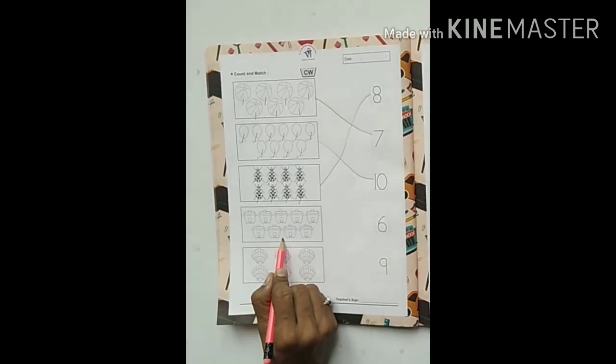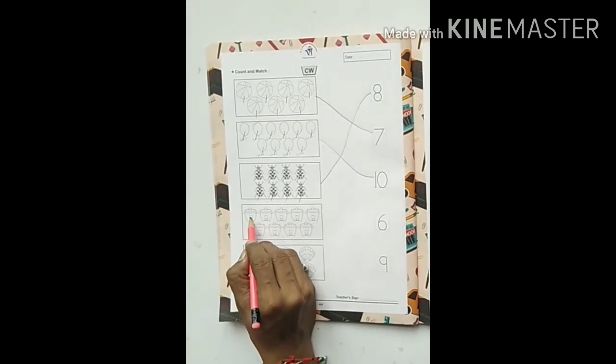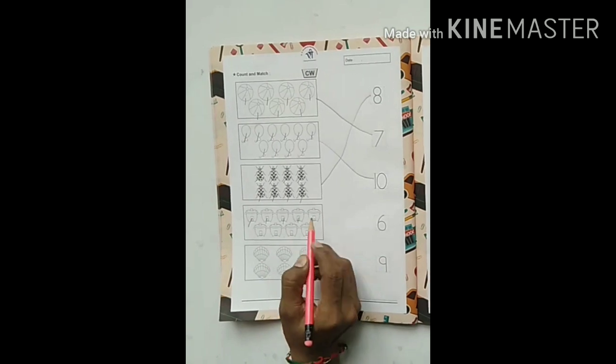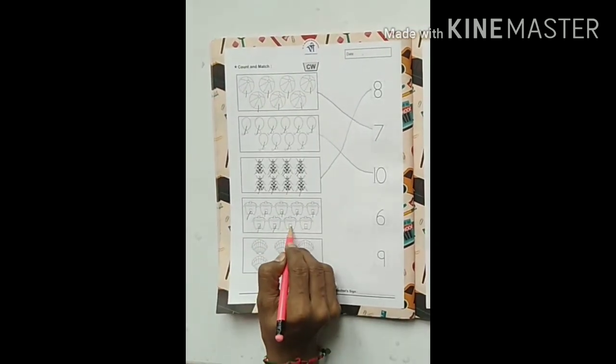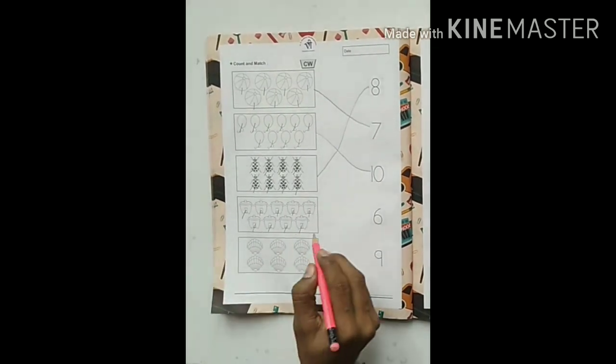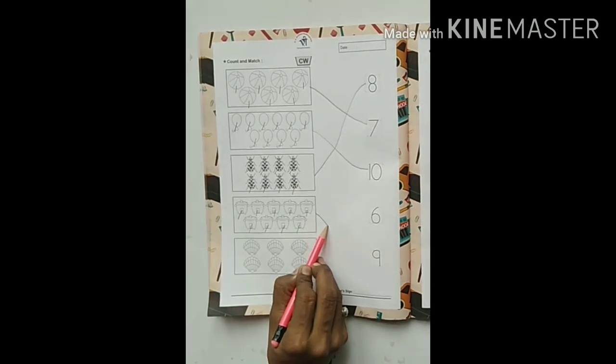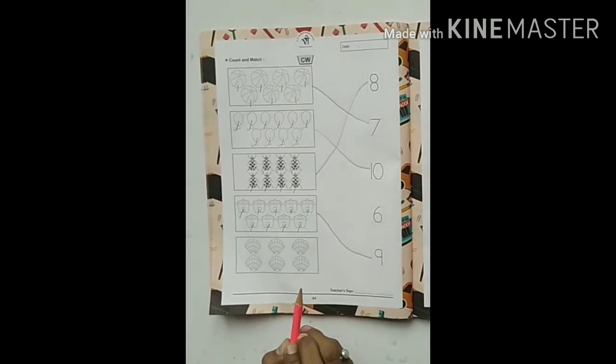Our next picture is pressure cookers. Let's count. 1, 2, 3, 4, 5, 6, 7, 8, 9. Where do we have the 9 number? Here. So we have to match with the 9 number.